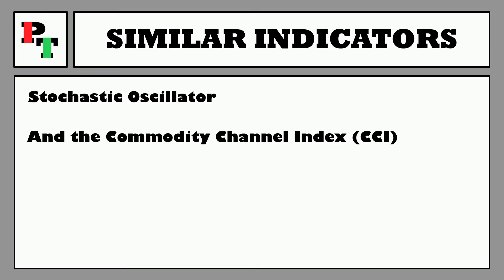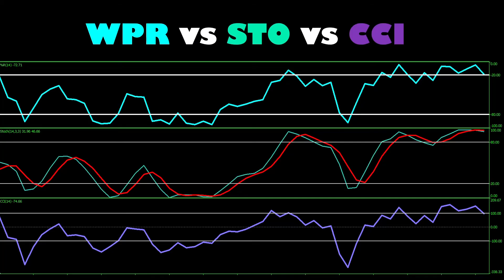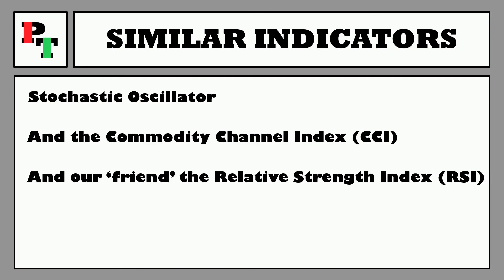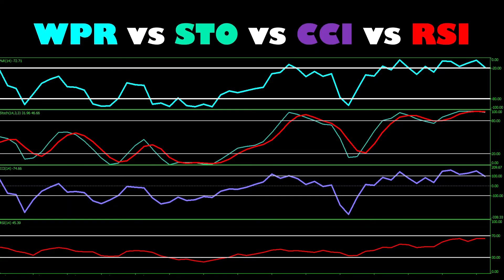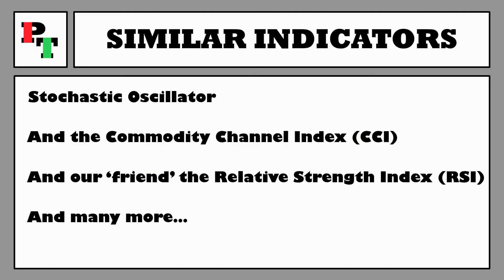We also have the Commodity Channel Index — adding it in purple, the dips and rises are about the same, with only slight occasional differences. And the Relative Strength Index in red gives fewer signals, but the general trend of peaks and troughs is of a similar nature to the other indicators. There's no shortage of oscillators out there trying to find overbought/oversold signals for you to practice with.